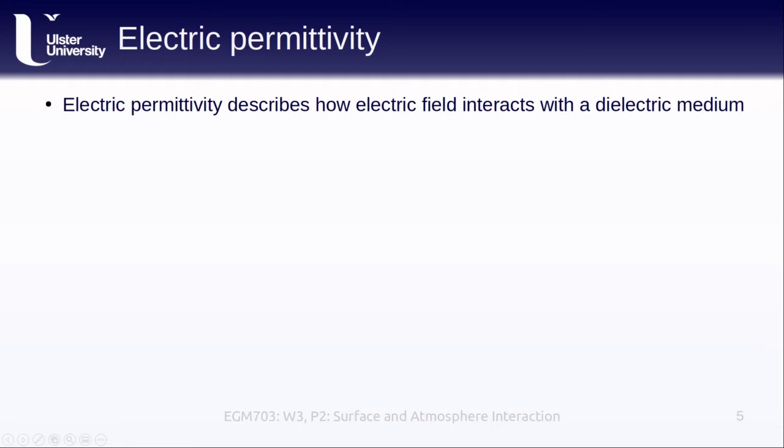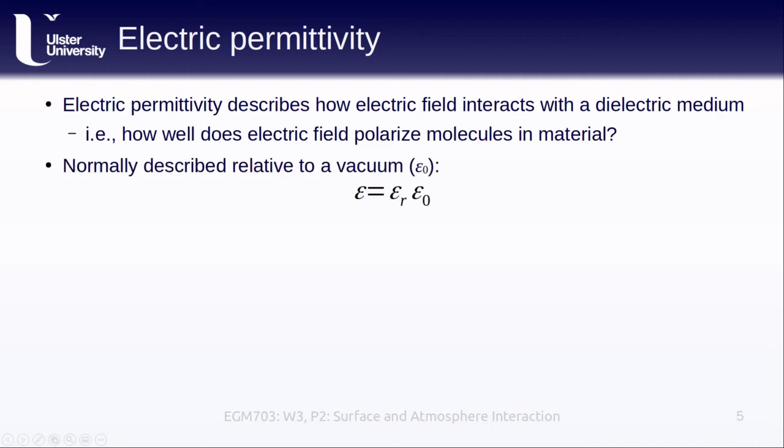The electric permittivity describes how an electric field interacts with a dielectric material or medium. It describes how well an electric field polarizes the molecules in a material or how well the material transmits the electric field. We normally describe the permittivity of a material relative to the permittivity of a vacuum, epsilon naught. Here, epsilon r is just a dimensionless value that relates these two quantities.